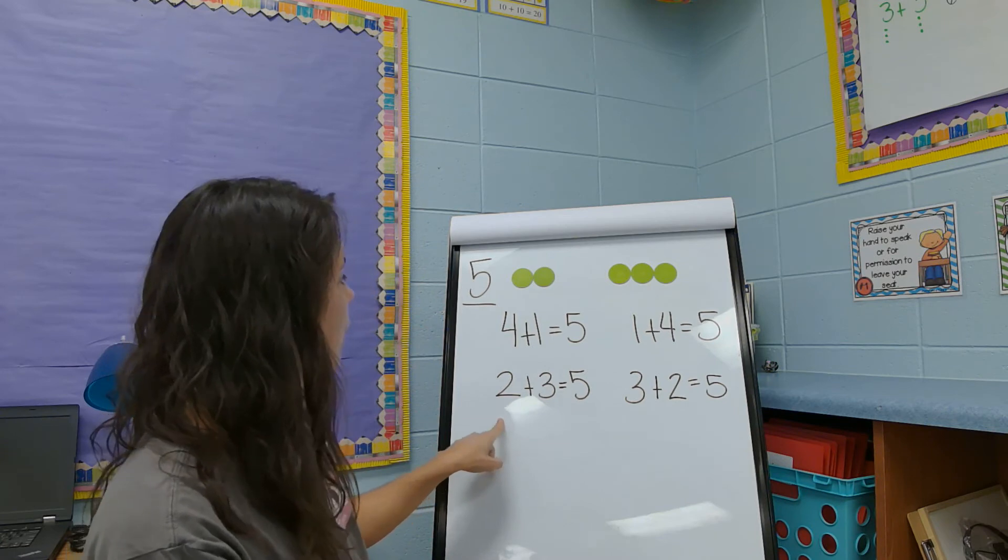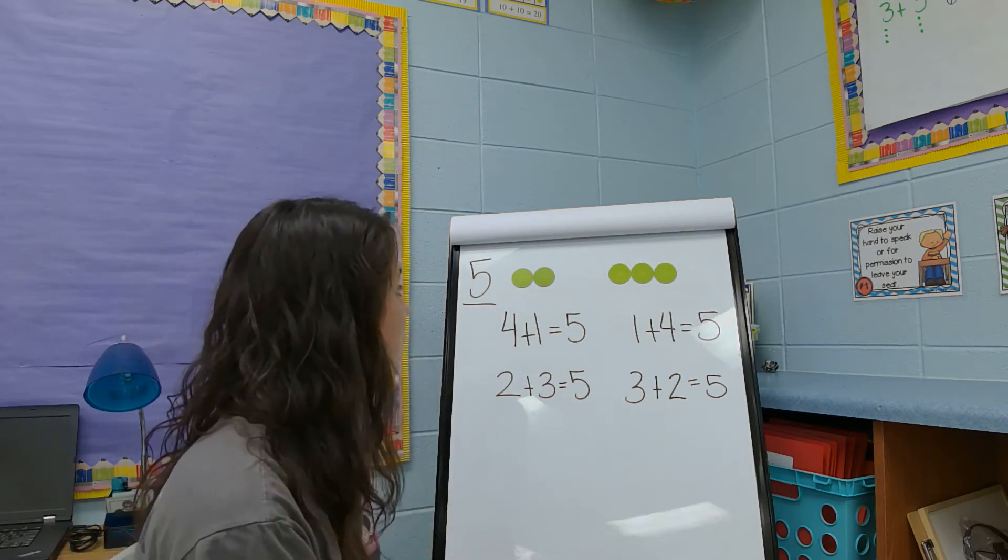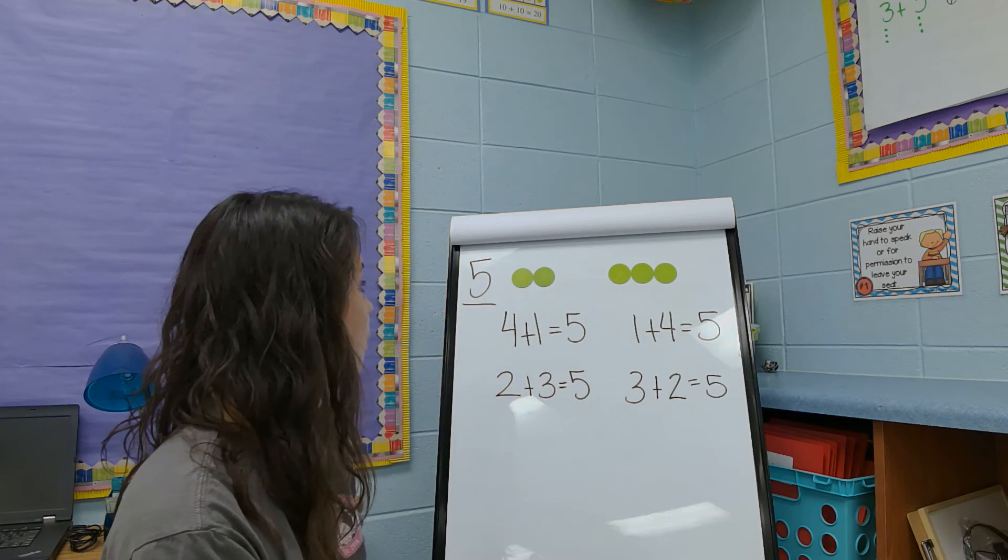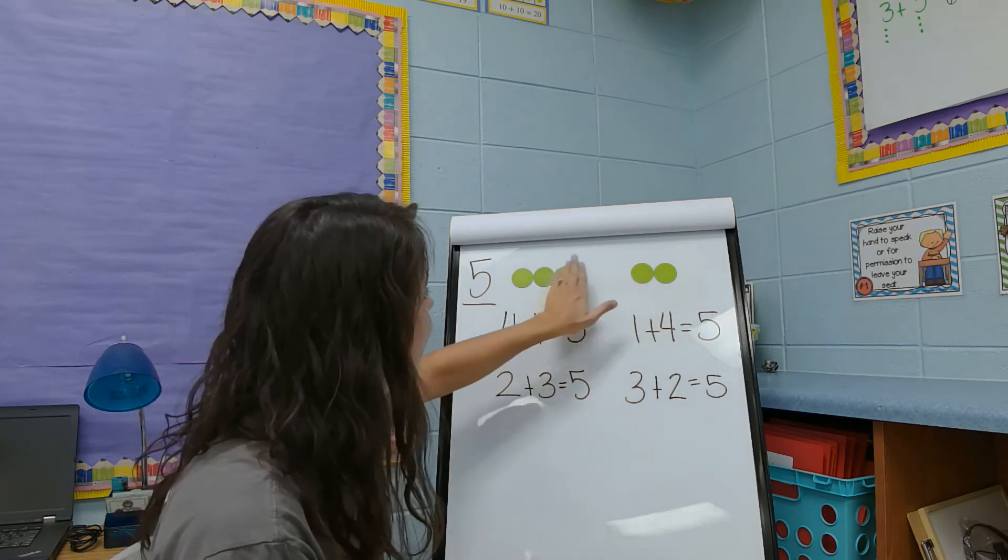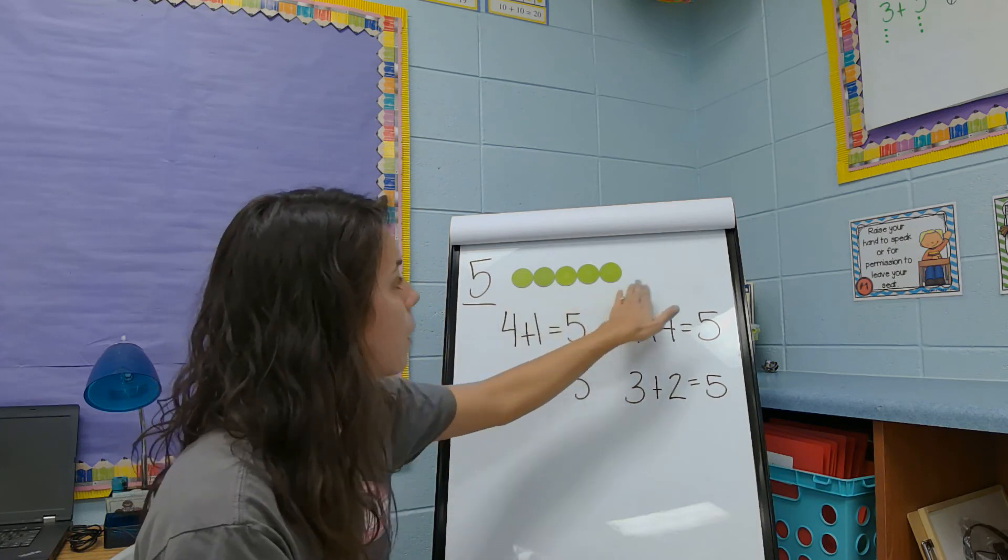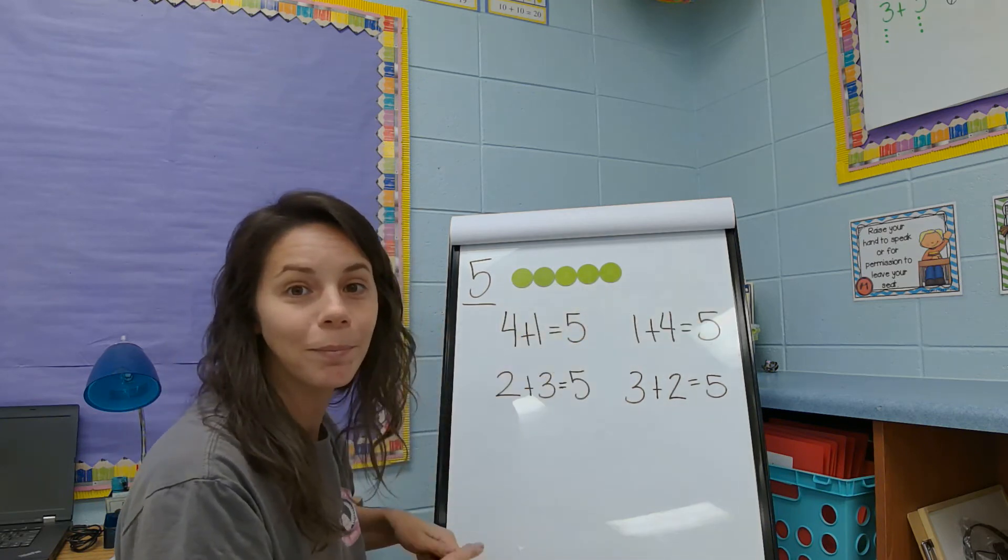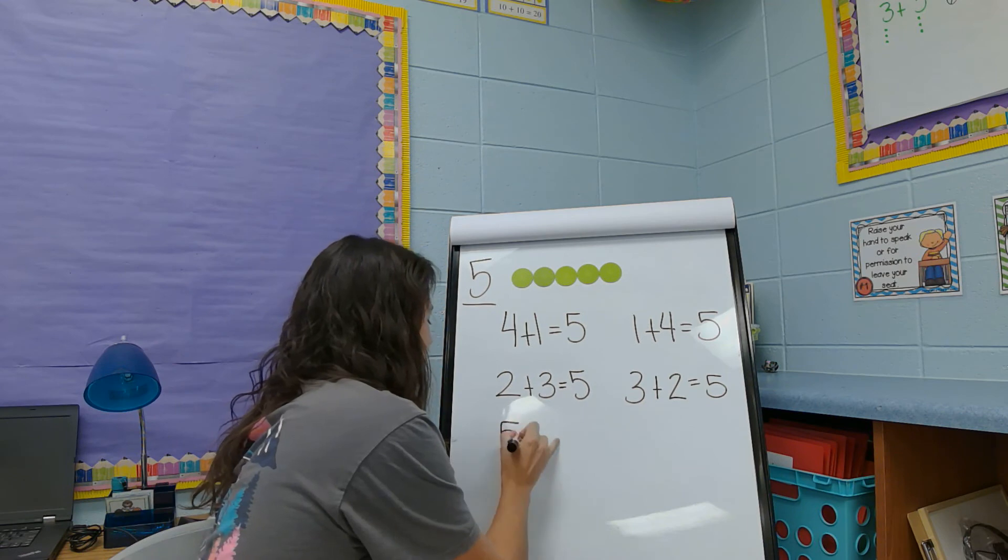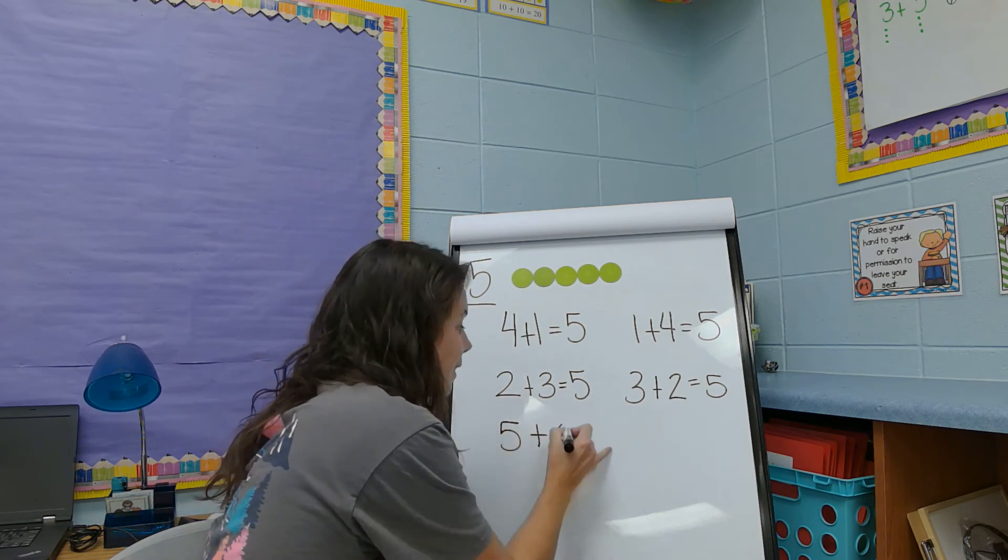All right. Now let's do one last question. Can I make another group? What if I have all five of them in one group? And then over here? I would do five plus zero.